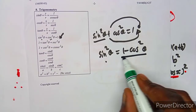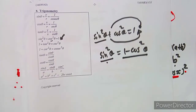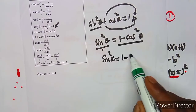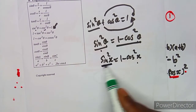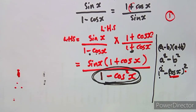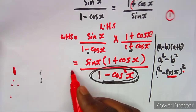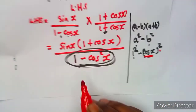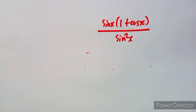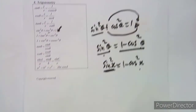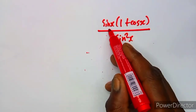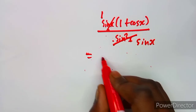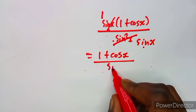So 1 minus cos²x is equivalent to sin²x. We replace the denominator 1 minus cos²x with sin²x. This gives us sine x times (1 + cos x) in the numerator, over sin²x in the denominator. We can cancel one sine from the numerator with one sine from the denominator, leaving (1 + cos x) over sine x.